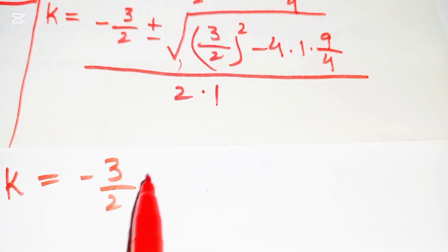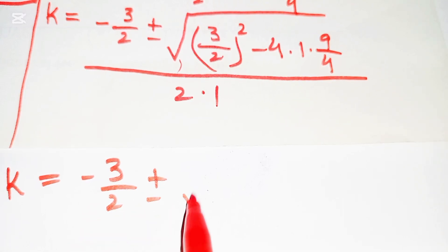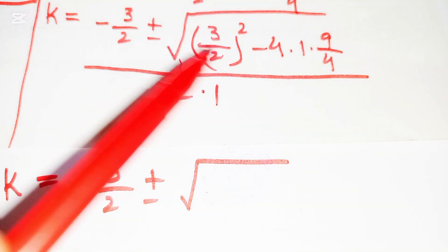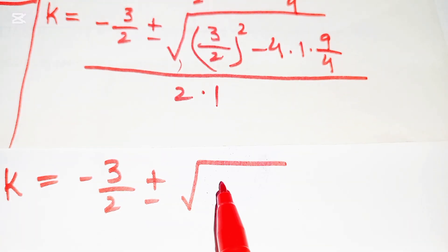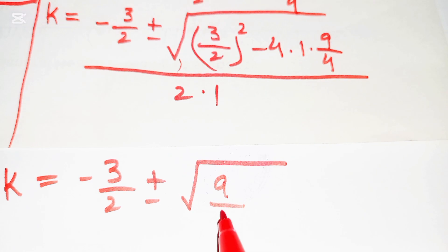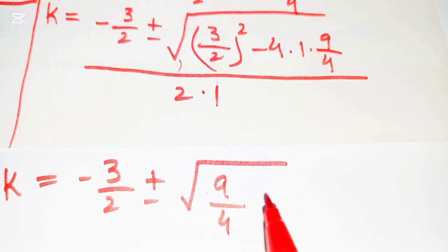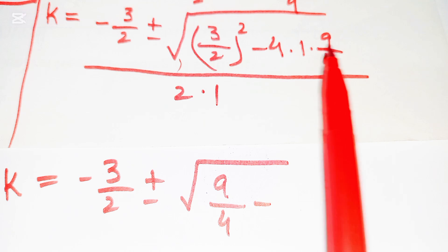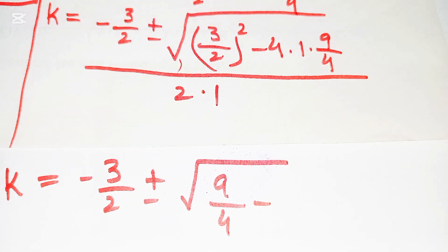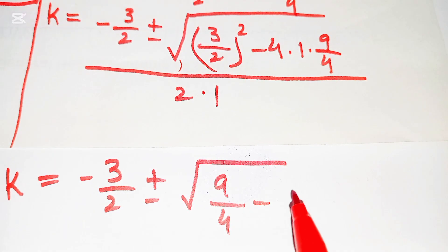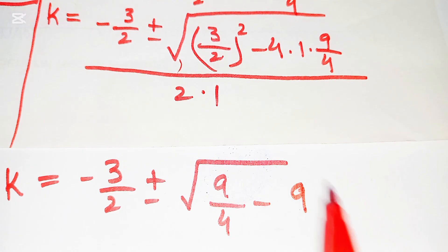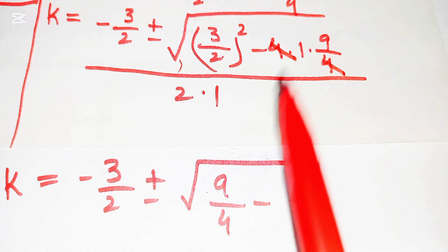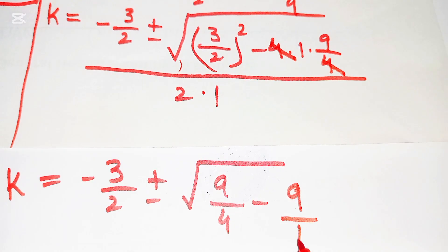So k = (−3/2 ± √(9/4 − 4·1·9/4)) / 2. The 4 cancels out, leaving 9/1 = 9 in the subtracted term.